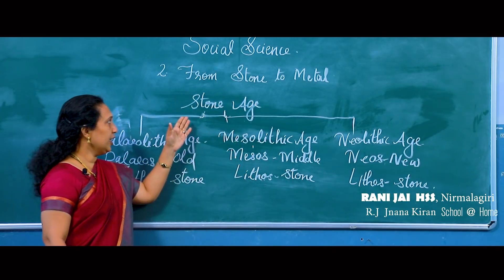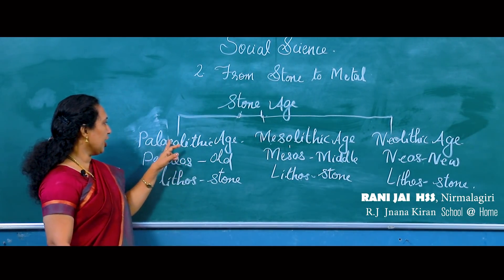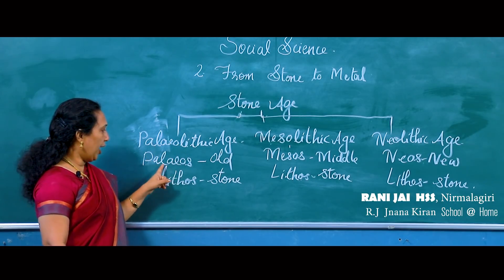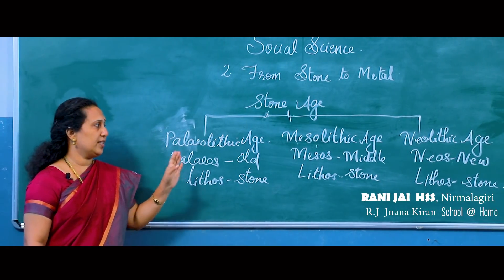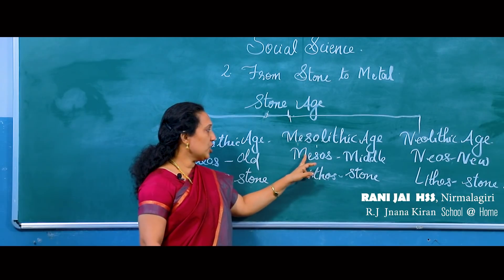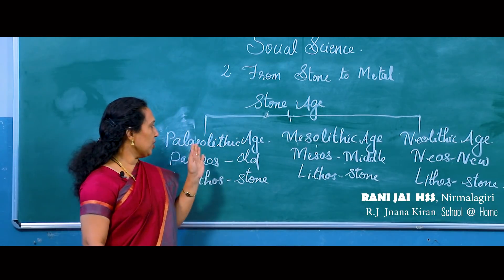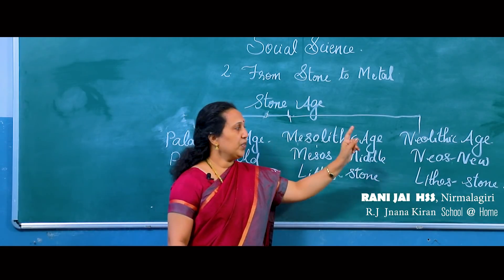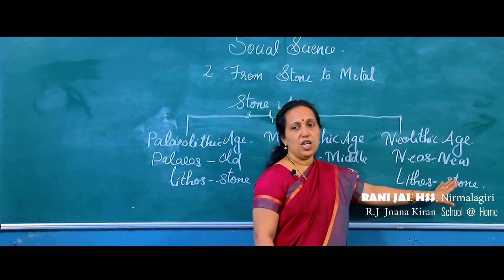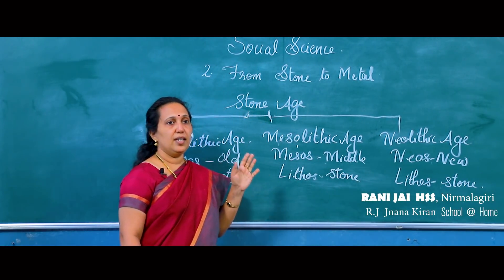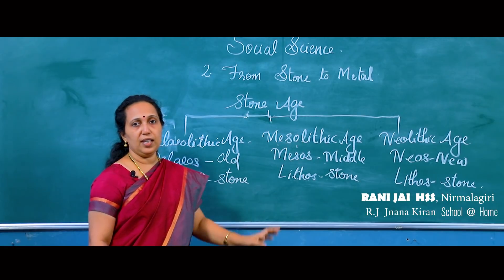Children, is it clear for you? We have learned about the divisions during the Stone Age: Paleolithic Age, Mesolithic Age, and Neolithic Age. Paleolithic Age is from 'paleos' meaning old and 'lithos' meaning stone — Old Stone Age. Mesolithic is from 'mesos' meaning middle and 'lithos' meaning stone — Middle Stone Age, as it lies between Paleolithic and Neolithic. Neolithic is from 'neos' meaning new and 'lithos' meaning stone — New Stone Age. These are the main divisions of the Stone Age period.